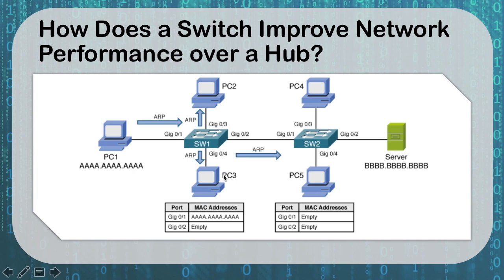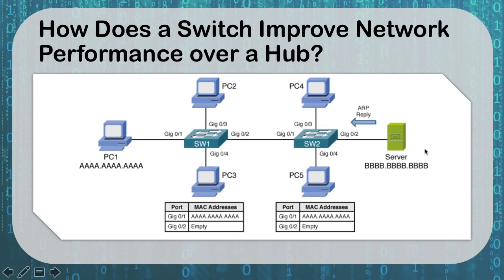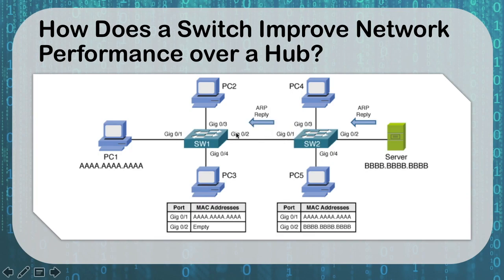The request hits switch 2, which is also empty, so it sends the request out all of its ports as well. It finally finds B. B answers back saying it's B and tells the switch to send traffic back to A. The switch gets that reply and knows A is out port 01, so it sends it out port 01. It gets to switch 1, who also knows A is on port 01, and delivers it to A.